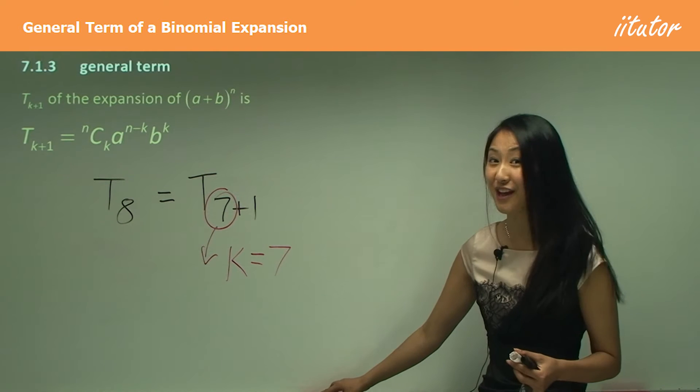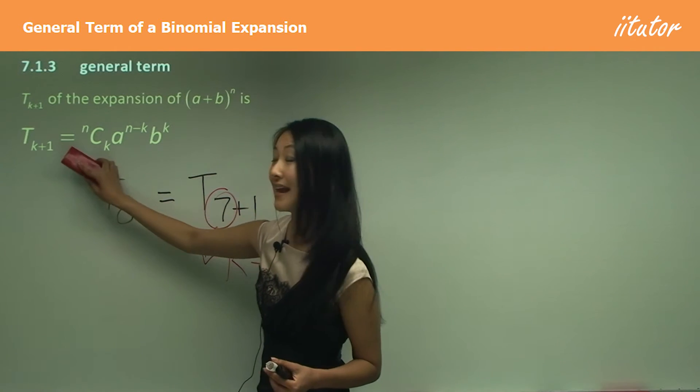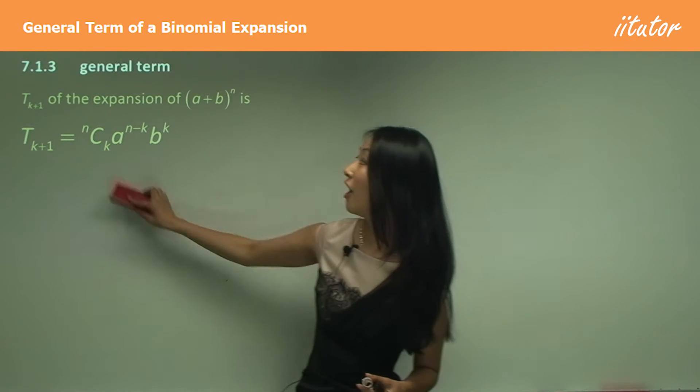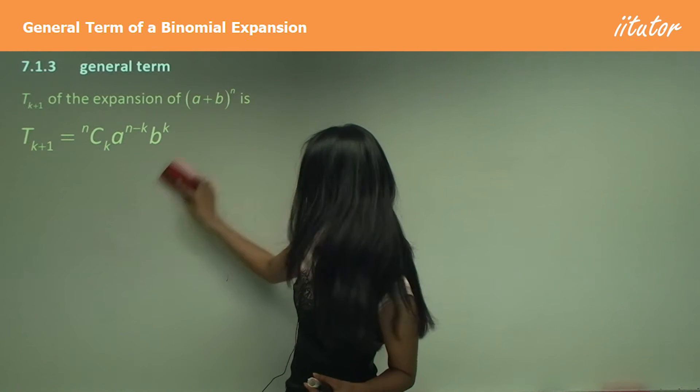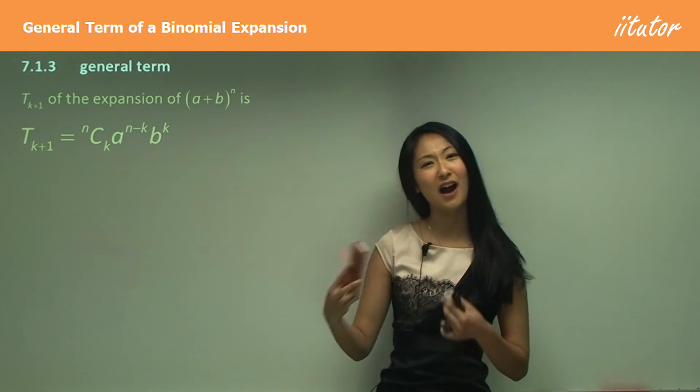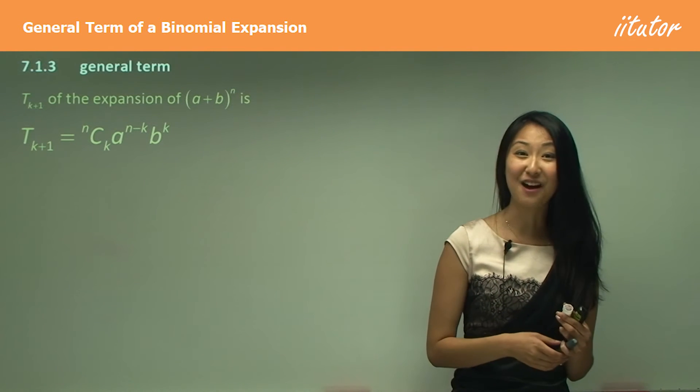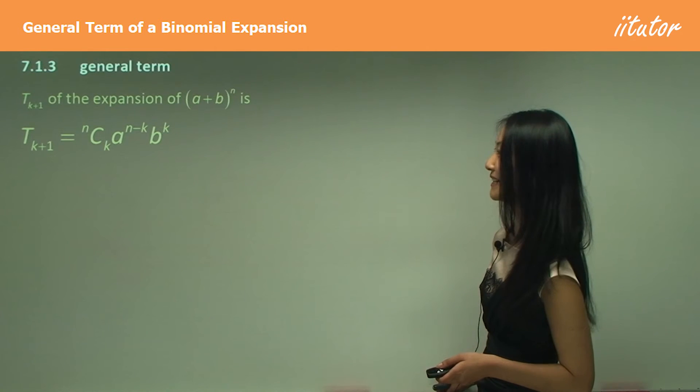So remember, general term is, the term is given to us, k plus one equals to nCk, and a to the power of n minus k, and then b to the power of k down there. So I think that's pretty easy to remember, because we've kind of gone through why that is. So let's go through some questions now, where I want you to work out how we write the general term for specific expansions.